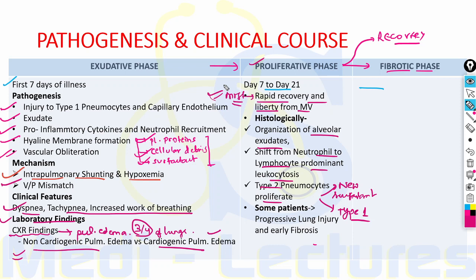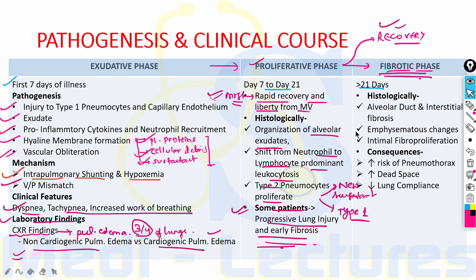However, some patients undergo progressive lung injury and early fibrosis during the proliferative phase, progressing into the fibrotic phase after 21 days. Histologically, the fibrotic phase is characterized by alveolar duct and interstitial fibrosis, emphysematous changes with large bulla formation, and intimal fibro-proliferation in the pulmonary microcirculation leading to vascular occlusion and pulmonary hypertension. Consequences include pneumothorax, increased dead space, and decreased lung compliance.